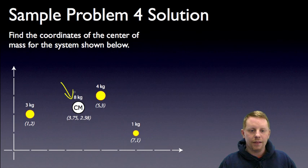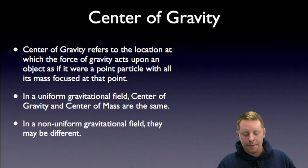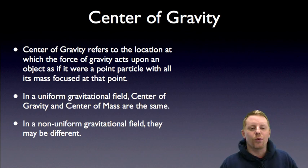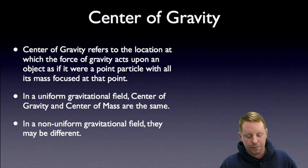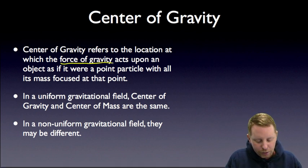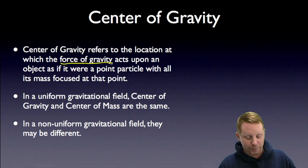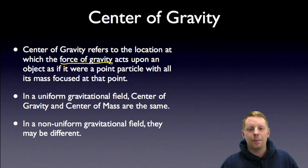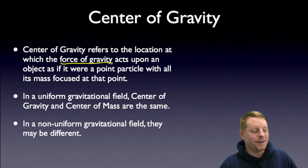Before we sign off, let's briefly discuss the difference between center of gravity and center of mass. Center of gravity refers to the location at which the force of gravity acts upon an object as if it were a point particle with all its mass focused at that point. In a uniform gravitational field — which is usually what we're dealing with — center of gravity and center of mass are the same. But in a non-uniform gravitational field, you can't make that assumption; they may be different.